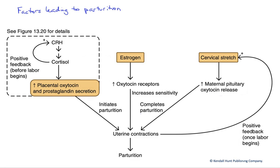In this diagram, we'll examine the factors leading to parturition or childbirth. We're going to look at three main avenues: factors that initiate parturition, factors that increase the sensitivity to hormonal and paracrine agents that contract the myometrial layer of the uterine wall initiating uterine contractions to push the baby out, and finally factors that help complete that parturition.